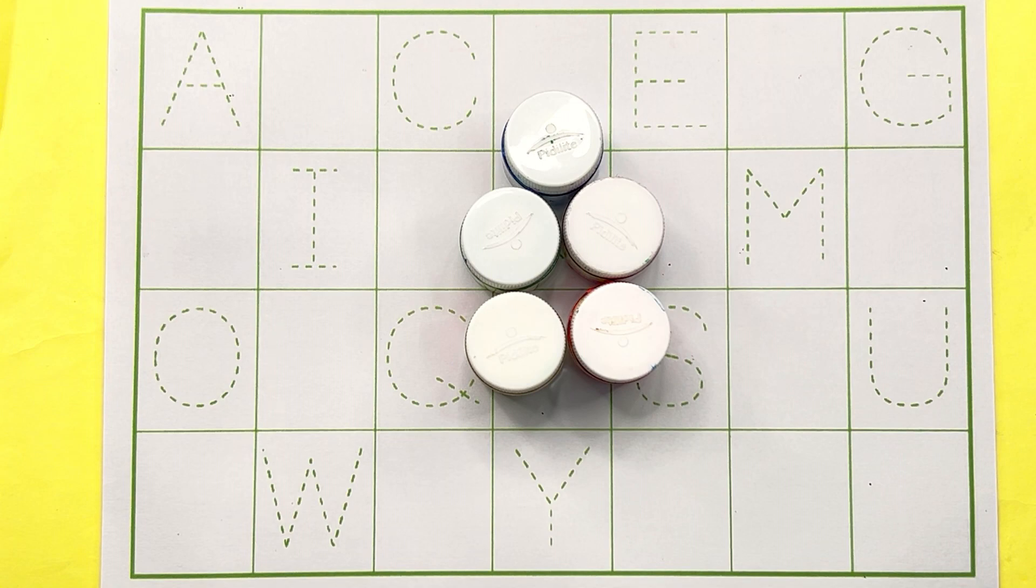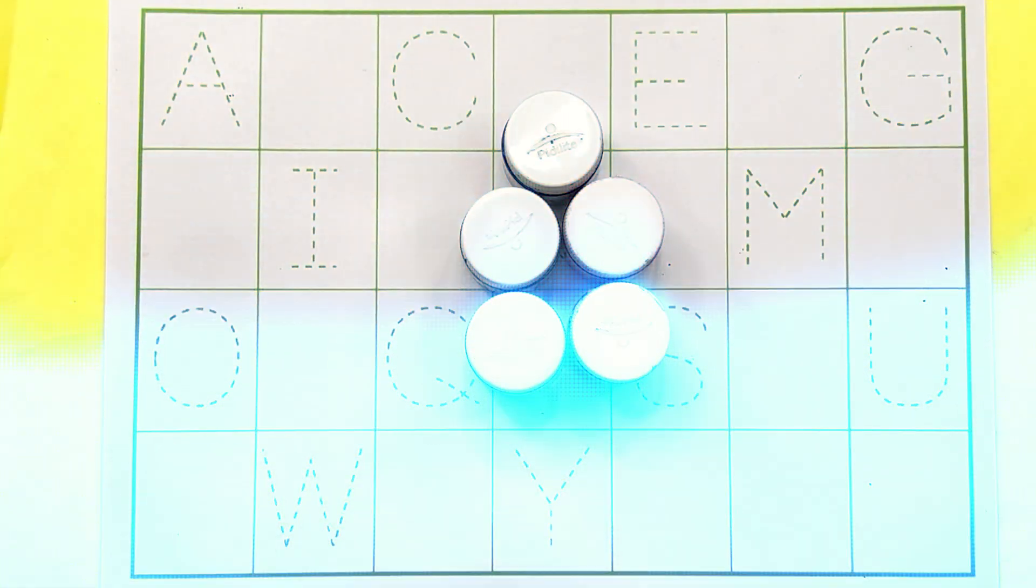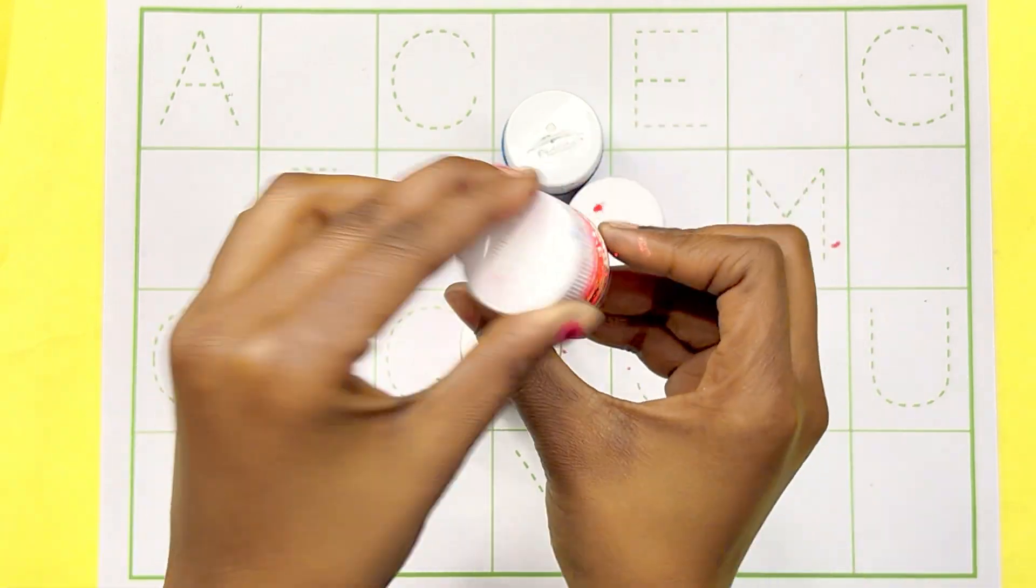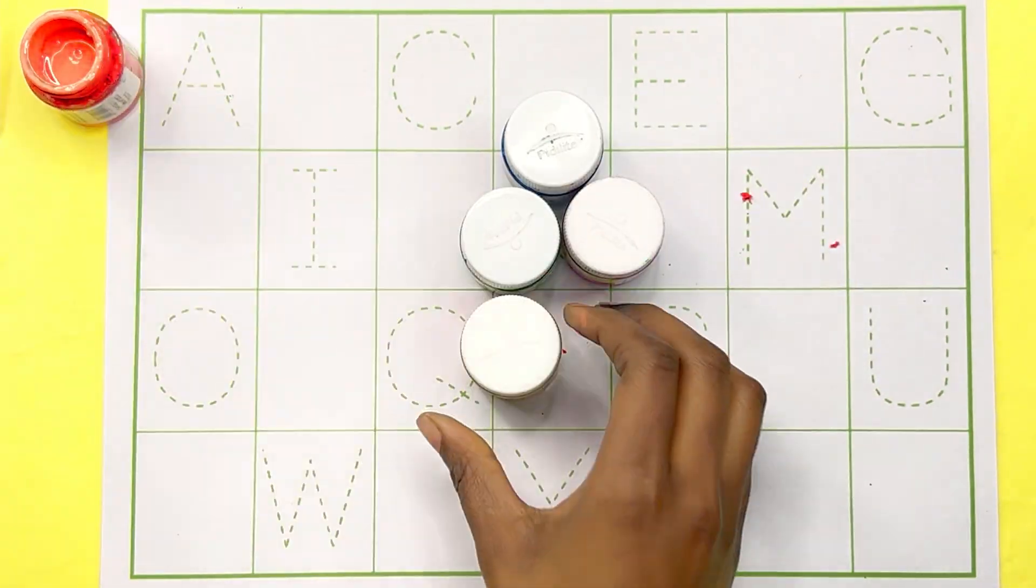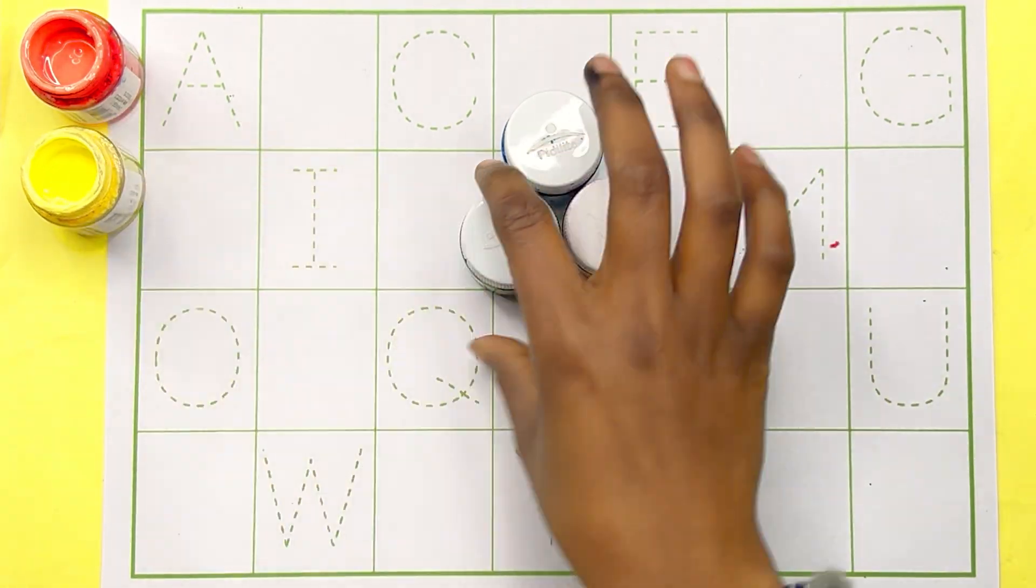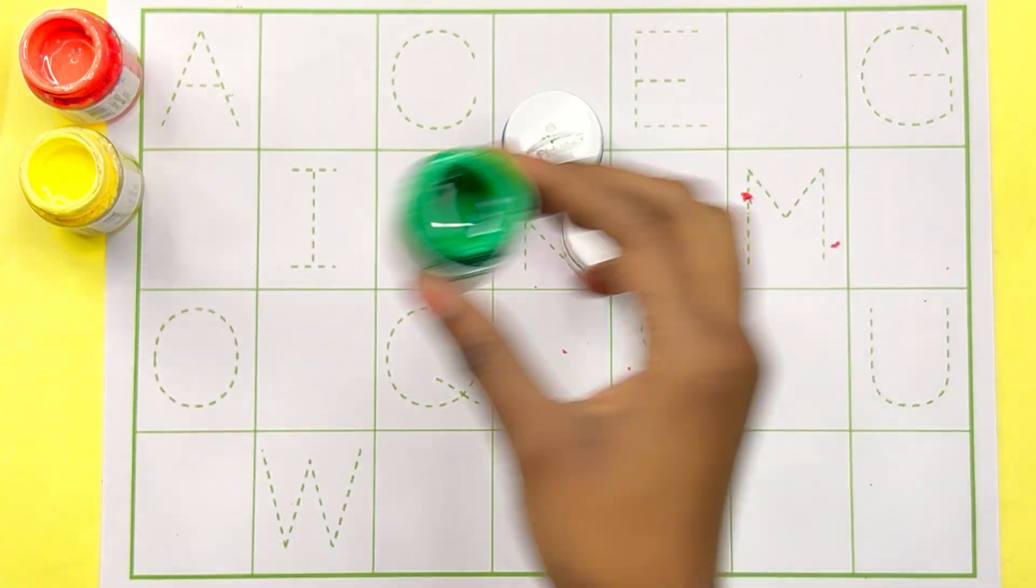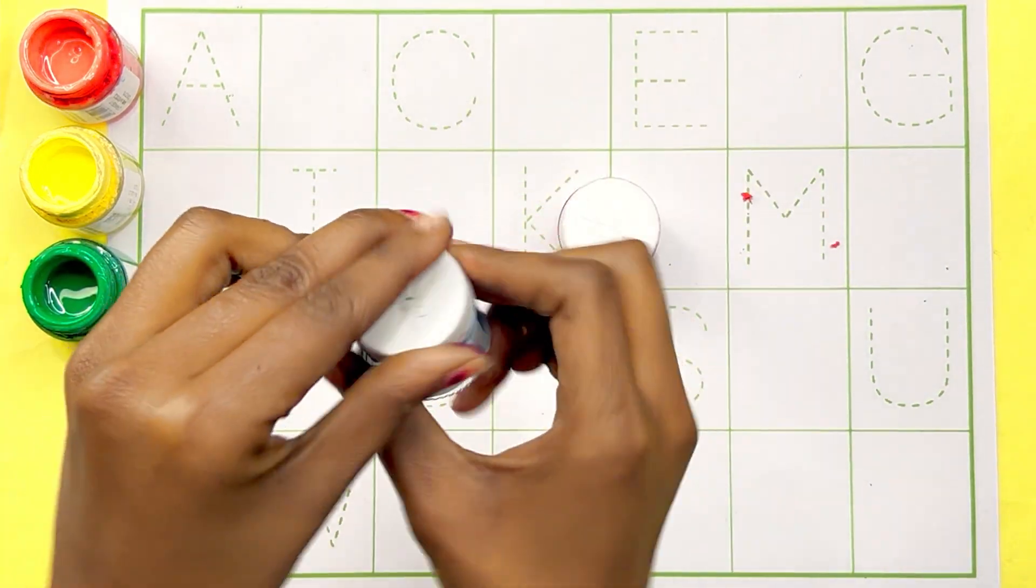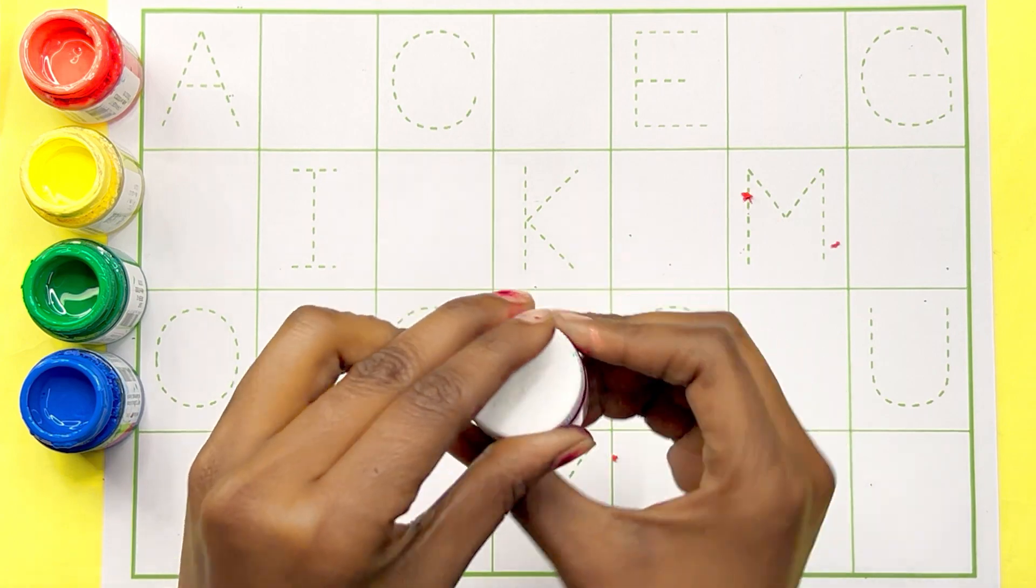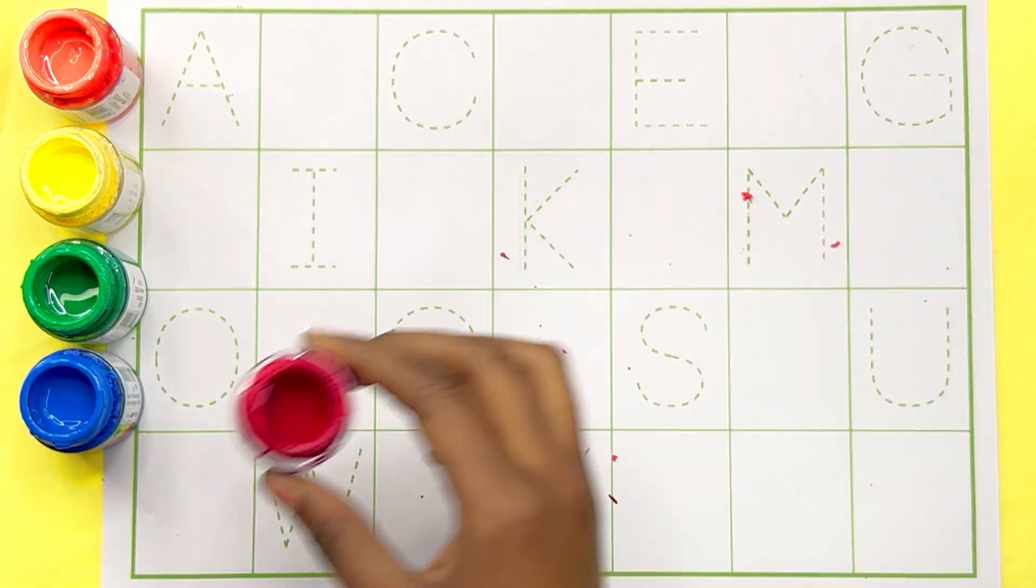Colors name: orange color, yellow color, green color, blue color, red color.